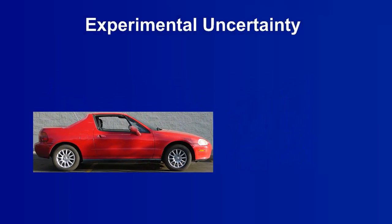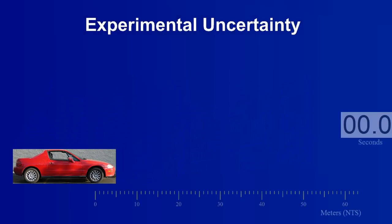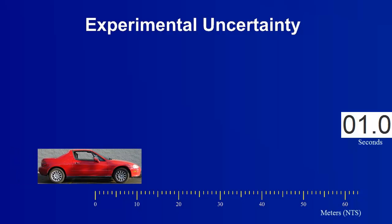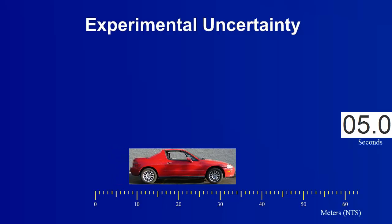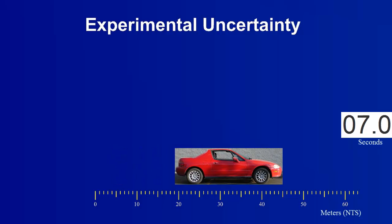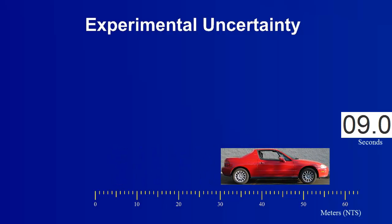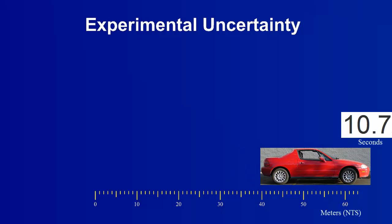When conducting an experiment, often many variables are recorded to calculate a resultant. For example, to calculate the speed of a car, the distance it travels and the time it took to travel that distance are recorded.